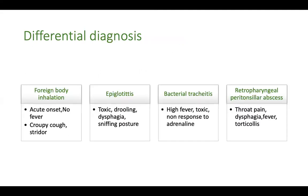The differential diagnoses of stridor include foreign body inhalation, epiglottitis, bacterial tracheitis, and retropharyngeal or peritonsillar abscess. Foreign body inhalation usually presents without fever; the history is typically acute onset — the child was eating or laughing and suddenly the stridor sound appeared. That is the classical history of foreign body inhalation.